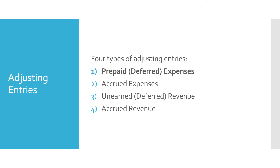There are four types of adjusting entries: prepaid expenses, accrued expenses, unearned revenue, and accrued revenue. We're going to be talking about prepaid expenses for the rest of this video lecture and the next.